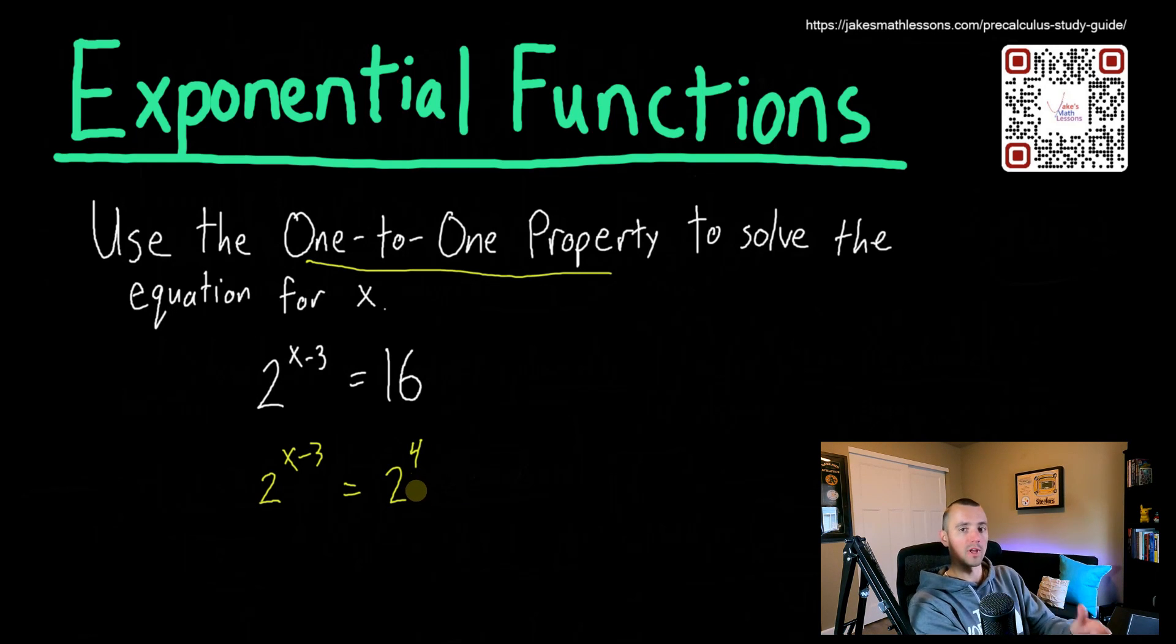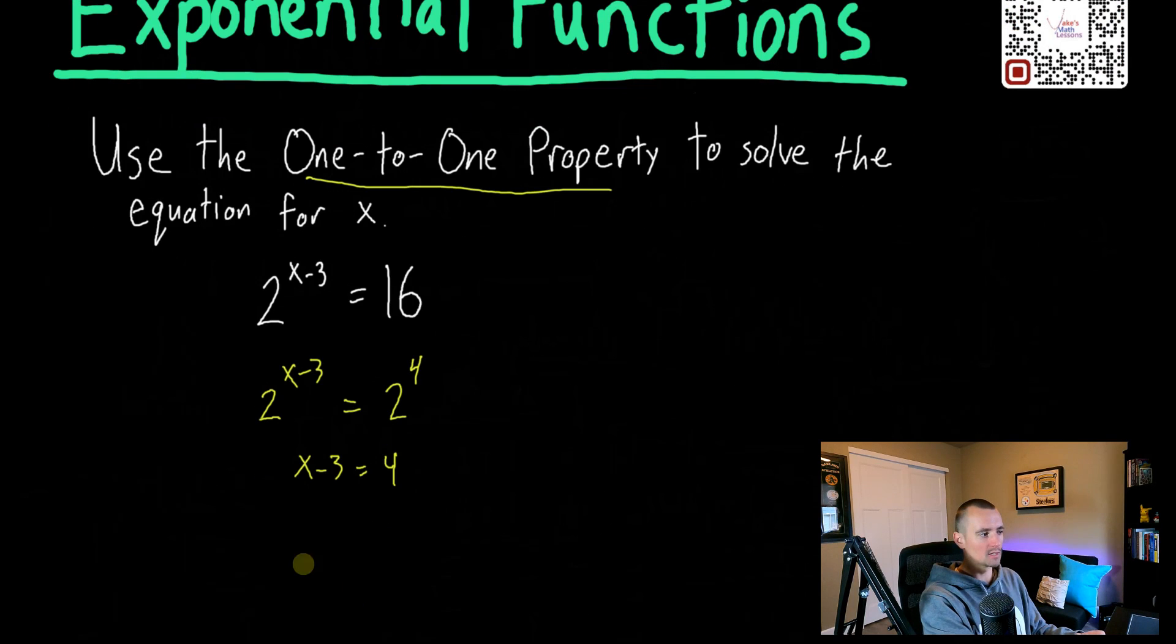Now we can apply the one-to-one property. So the one-to-one property tells us if we have two to some power equals two to some power, the powers themselves must be equal. So x minus three must equal four. Okay. Now we have an equation that probably looks a little bit more familiar to you of how to solve something like this. In this case, we can just add three to both sides and get x equals seven.